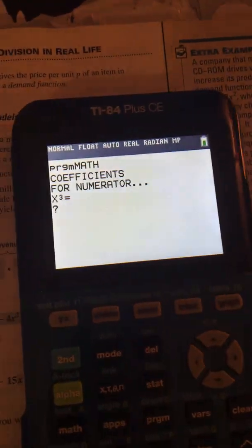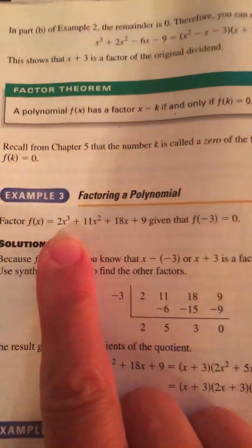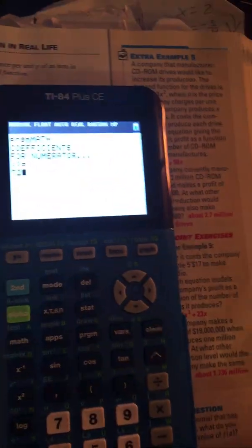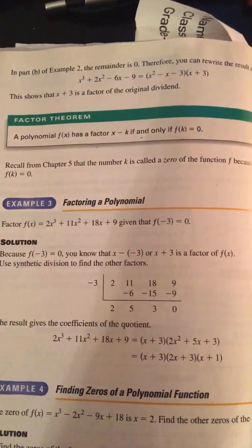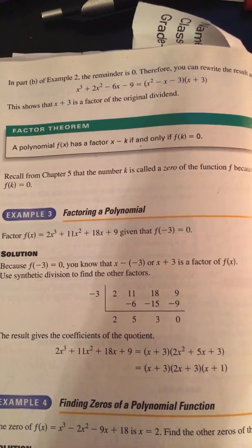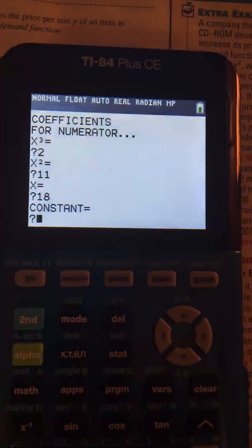Sorry about that. I made a lot of videos today. Now I started coughing. That's what happens when I talk too much. All right. So it asked me for the coefficient. So I look for the coefficient of X cubed and it is two. So I put in two and hit enter. And then it asked me for the coefficient of X squared. And that is 11. I put 11 and hit enter. Then it asked me for the coefficient of X and I put 18, 19 and hit enter. Then it asked for the constant or the bare number. And that's nine. So I put nine, enter.